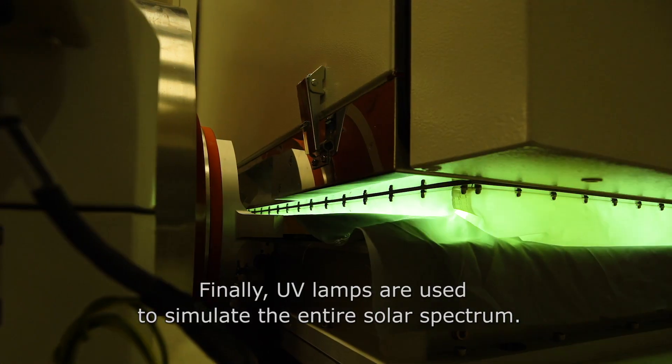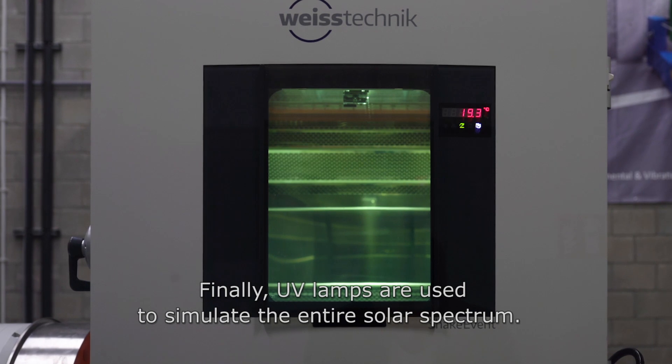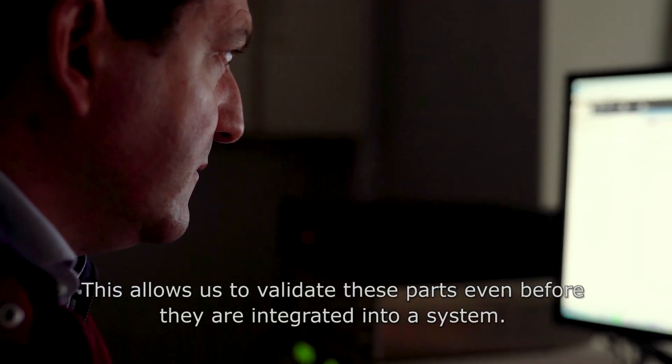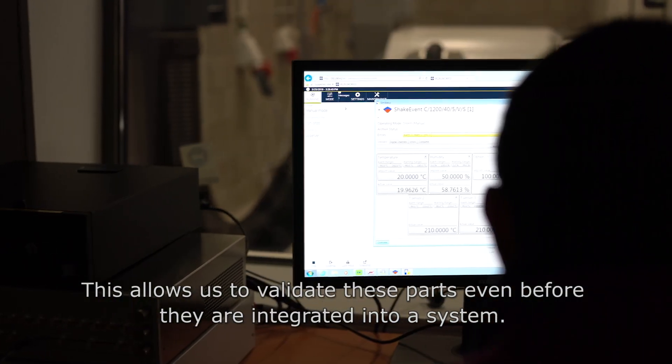Finally, UV lamps are used to simulate the entire solar spectrum. This allows us to validate these parts even before they are integrated into a system.